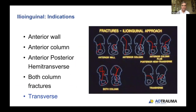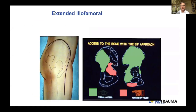The ilioinguinal approach addresses anterior wall, anterior column, anterior column plus posterior hemitransverse, and both column fractures — almost all treated through the ilioinguinal or a version of it, whether using the medial and lateral windows, just the medial window, all three windows, or a different combination. Some transverse fractures can also be addressed this way.